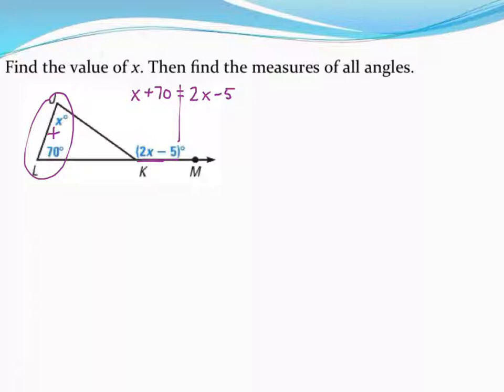So from here let's go ahead and solve for x. So I'm going to subtract x from both sides to get those together. 2x minus 1x is just x. At the same time I'm going to add 5 to get my constants out of there. And well just like that I have x. x is equal to 75.